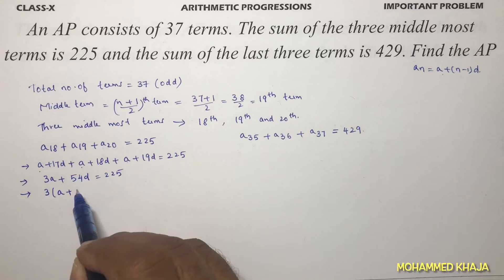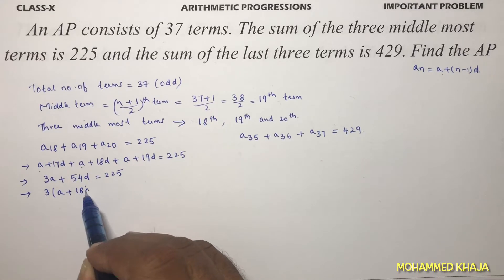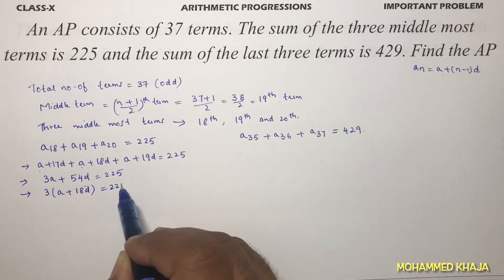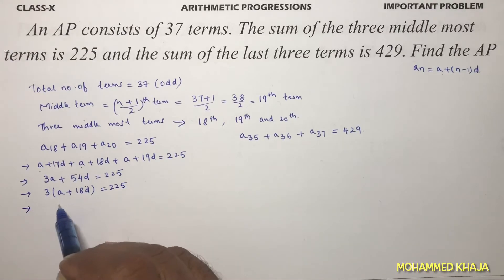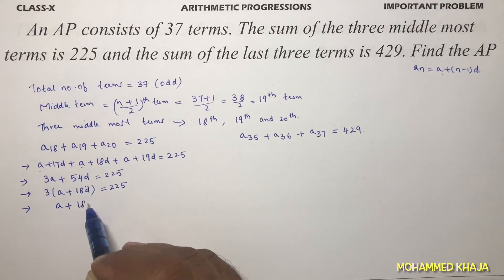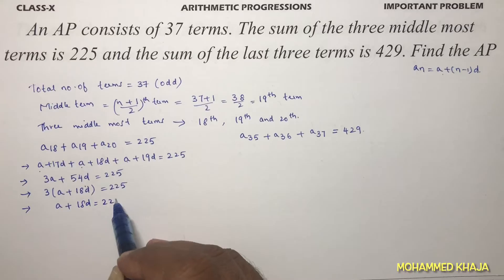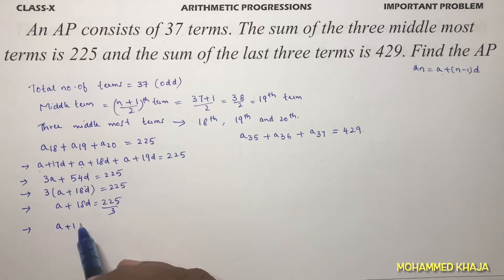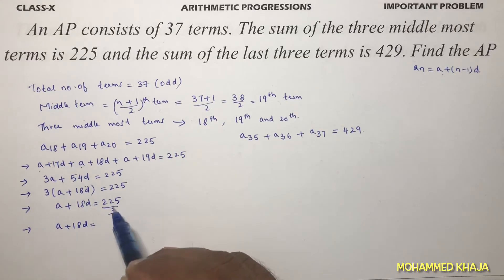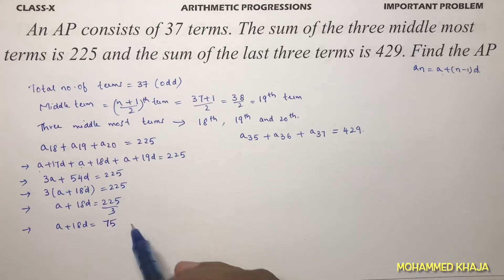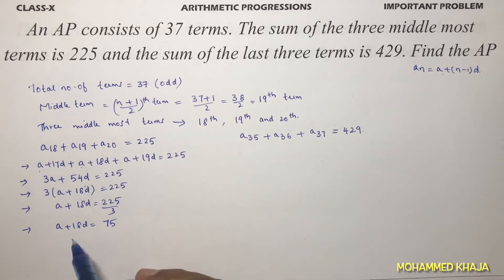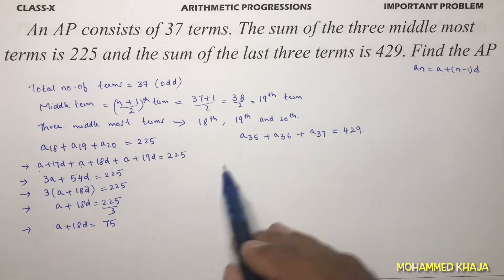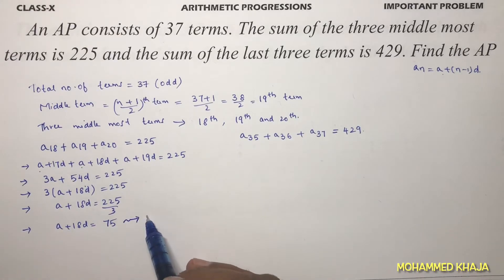Taking 3 common: 3(a + 18d) = 225, so a + 18d = 225/3 = 75. This is Equation 1.